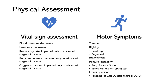Bradykinesia, also known as slowness of movement, is another hallmark motor symptom. This is a decrease in the ability to initiate, execute, and complete voluntary movements, which results in reduced speed and amplitude of movements. It can affect fine motor skills or gross motor movements. Common manifestations include difficulty with tasks that require fine motor coordination, such as buttoning a shirt, writing, or manipulating small objects. It can also affect larger movements such as walking, getting up from a chair, or turning in bed. It can also cause a decreased arm swing while walking, reduced facial expressions called a masked face, or monotone speech. Patients may have difficulty initiating movement, and movements may become progressively slower and smaller as the disease progresses.